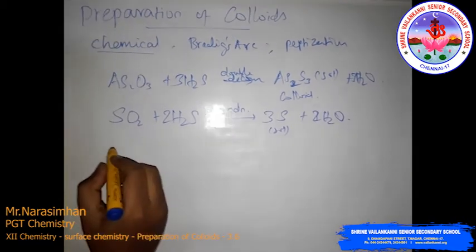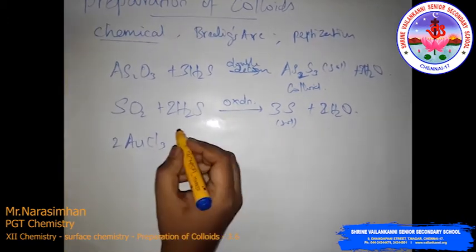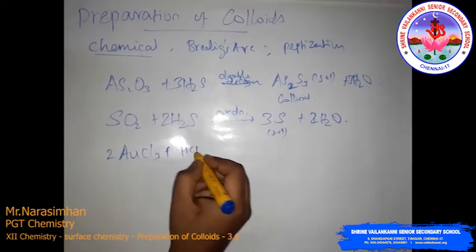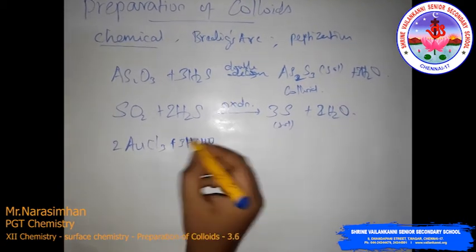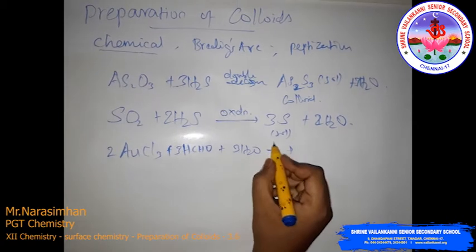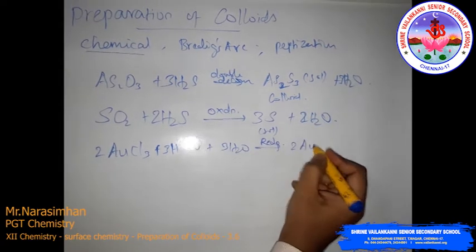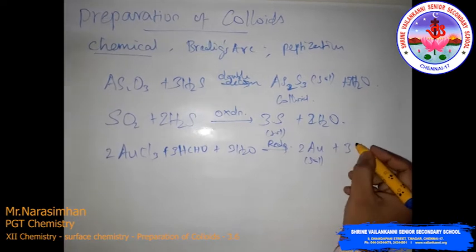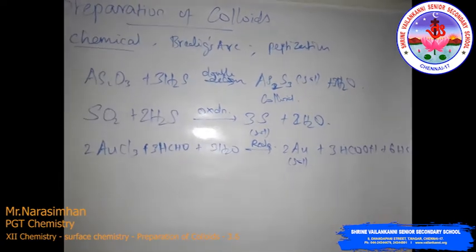The third example uses gold chloride (AuCl3) and formaldehyde (HCHO). It undergoes a reduction process to produce gold salt. Formaldehyde is converted to formic acid in the process.